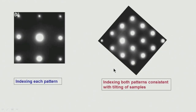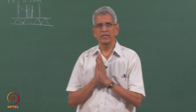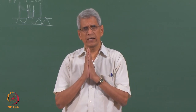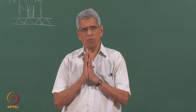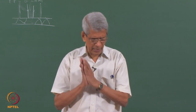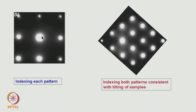The first thing we must do to get information about the microstructure is go to a symmetric diffraction pattern. A symmetric pattern means the beam is oriented along a particular zone axis direction. When we come to a symmetric pattern at a low-index zone axis, we will get a symmetric pattern like the one shown.